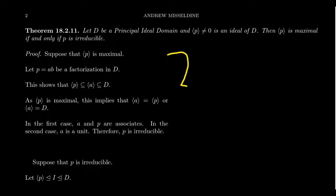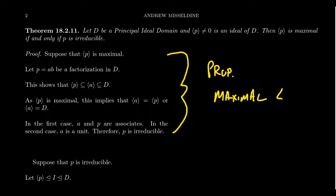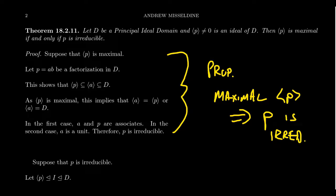Let me highlight something: in the first direction of this proof, we did not use that the domain was a principal ideal domain — we only needed a maximal principal ideal. So as an important proposition applicable in other contexts: in any commutative ring with unity, a maximal principal ideal generated by P implies that P is irreducible. The importance of a principal ideal domain is that the reverse direction also holds, because all ideals are principal.